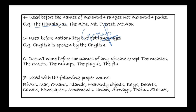Rule 5: 'The' does not come before the name of any disease, with certain exceptions. The exceptions are: the measles, the rickets, the mumps, the plague, and the flu. These five diseases take 'the', whereas other normal diseases do not.